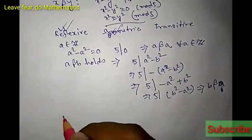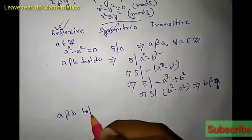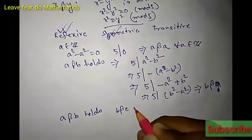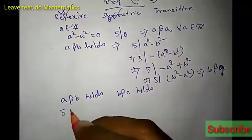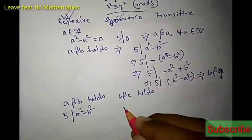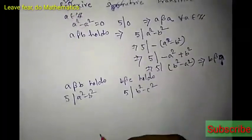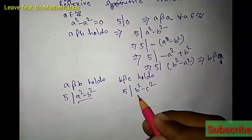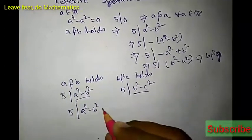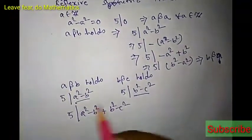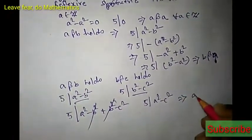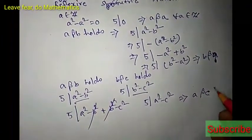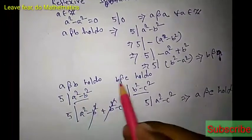Now for transitivity: let a beta b hold and b beta c hold simultaneously. This means 5 divides a squared minus b squared, and 5 divides b squared minus c squared. Then 5 also divides their sum: a squared minus b squared plus b squared minus c squared. The b squared terms cancel, so 5 divides a squared minus c squared, which implies a beta c holds. Whenever a beta b and b beta c hold, then a beta c holds, so the relation is transitive.